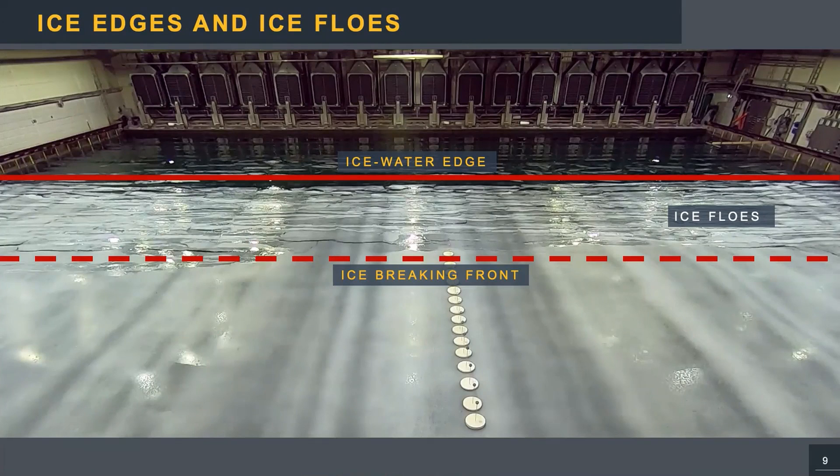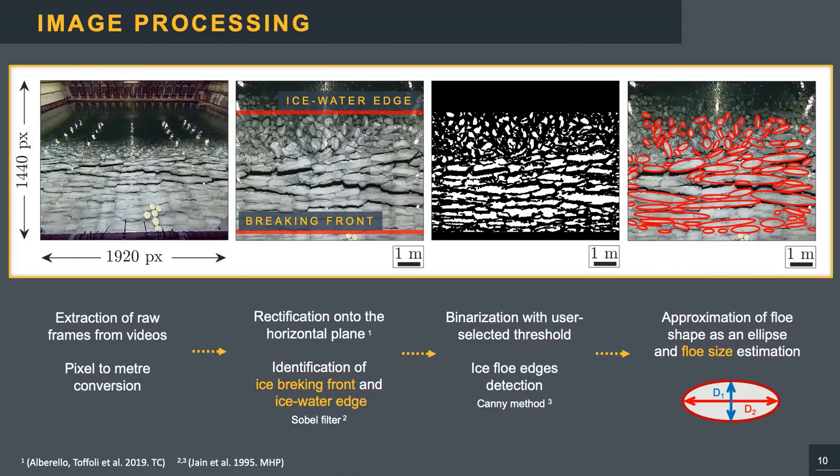So in the area comprised between the ice breaking front and the ice water edge, the breakup occurs both longitudinally and transversally, generating ice floes of non-trivial shape. So I designed an automated algorithm to extract the ice breaking front, the ice water edge, and the individual ice floes geometries from one video frame per second. Basically, the raw frames were rectified onto the horizontal plane to extrapolate dimensions of pixels. Then I used the Sobel filter to capture color gradients and emphasize edges, in order to identify ice breaking front and ice water edge, and estimate the distance from the wave maker. For the floes detection, the images were binarized with a user selected threshold, and the boundaries of the floes were determined using the Canny edge detector.